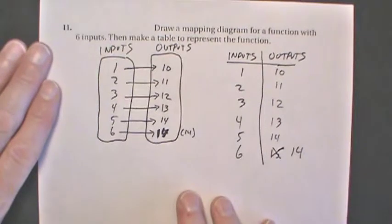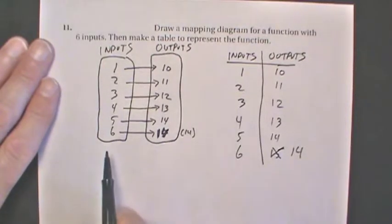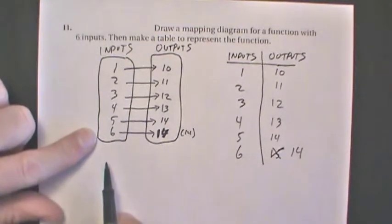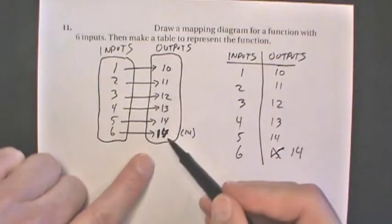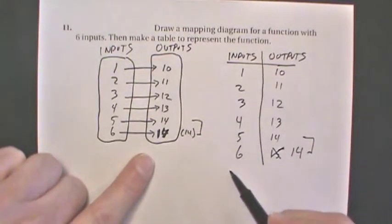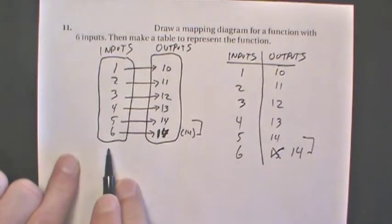This here would still work, satisfy the question, and be a function. For us to have a valid function, we just need every input to be unique. And every one is unique, only used once. The outputs can be used twice, as they are in this case here. But that's still a valid function, as long as all the inputs are only used once and they're all unique. So there's basically two examples to answer this question.